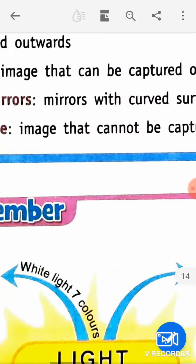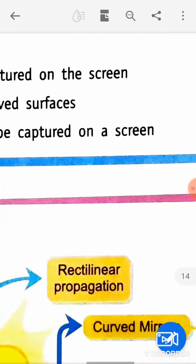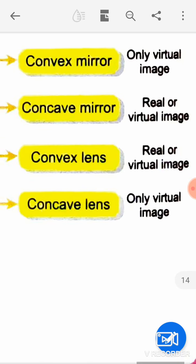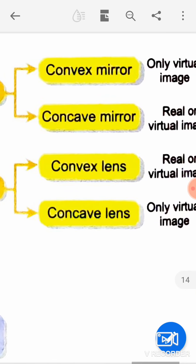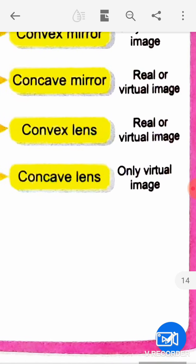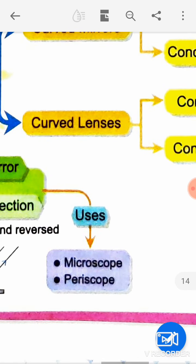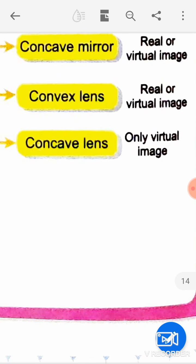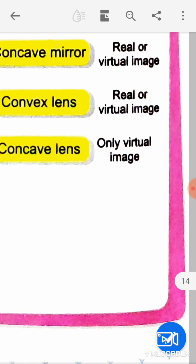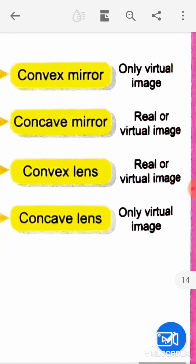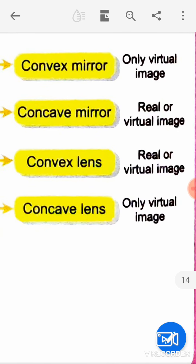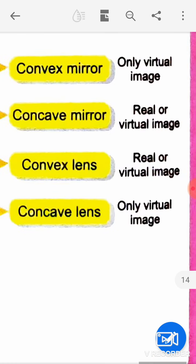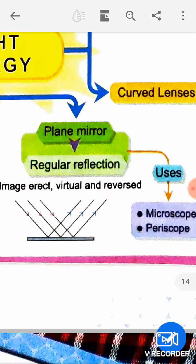A virtual image is one that cannot be captured on a screen. A concave mirror can form both real and virtual images. For lenses there are two types: convex lens and concave lens. A convex lens can form real or virtual images, while a concave lens forms only a virtual image. This is a little confusing in the chapter, but don't worry, I will clear it up.